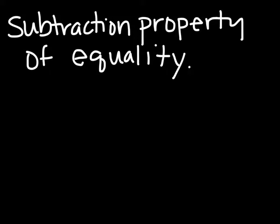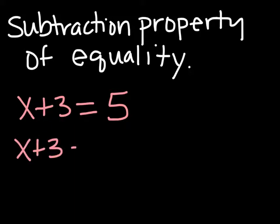Let's look at the subtraction property of equality to help us make equivalent equations. Subtracting the same number from each side of an equation produces an equivalent equation. If x plus 3 equals 5, then x plus 3 minus 3 equals 5 minus 3, or x equals 2.